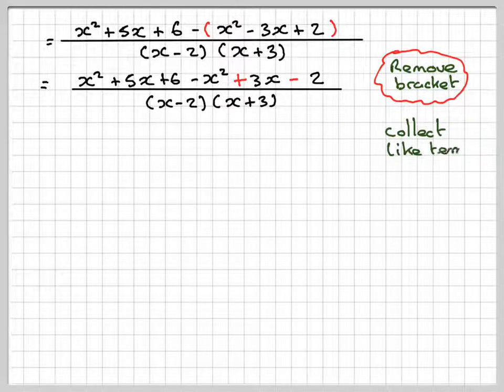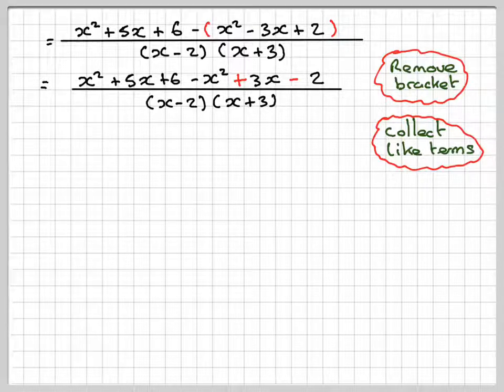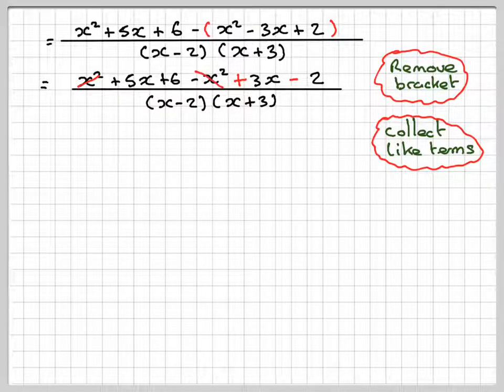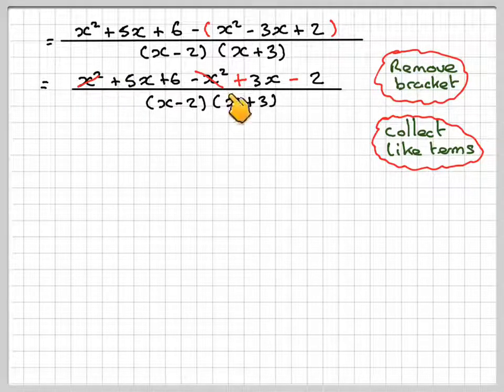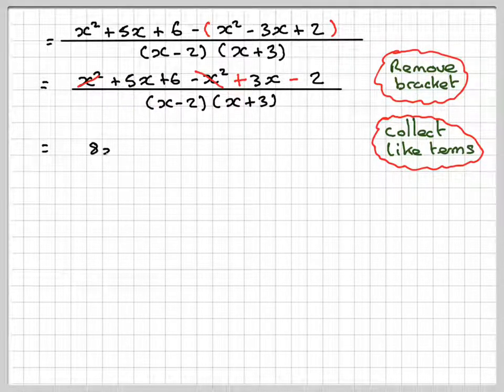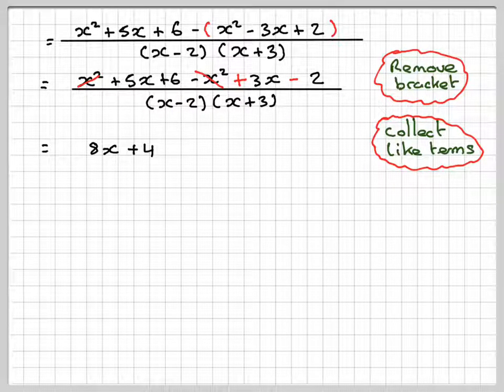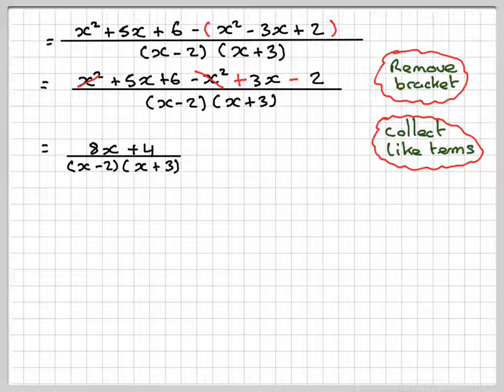Collect like terms. So we've got the x squared and this minus x squared cancels out. Now we have 5x plus 3x, which makes 8x. 6 minus 2, which makes plus 4. Still over x minus 2x plus 3. There's a common factor of 4.